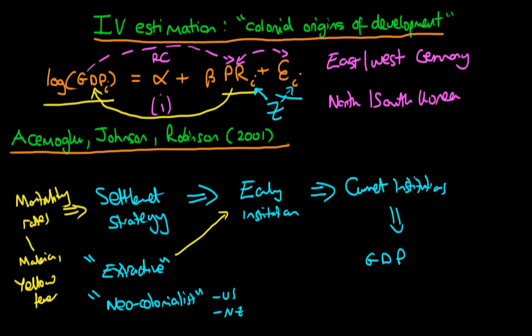The idea with this instrument is that it affected property rights but didn't affect any of the omitted factors which might also determine GDP. Furthermore, we can't think about there being a reverse causal effect, because mortality rates are in no way affected by the GDP of a country. You can think about changes in Z as causing changes in property rights and in turn causing changes in GDP. So we're considering the relationship of interest rather than the reverse causal relationship.